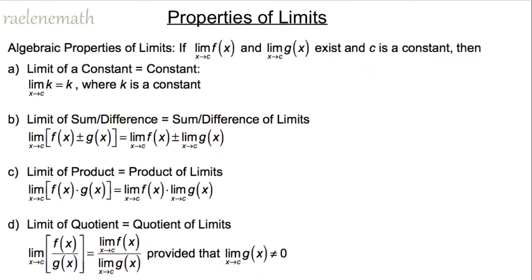Just like when working with exponents, logarithms, and trigonometric functions, limits have certain rules that apply to them — called the rules, laws, identities, or properties of limits. The algebraic properties of limits hold if the limit as x approaches c of f(x) and the limit as x approaches c of g(x) both exist, where c is a constant.